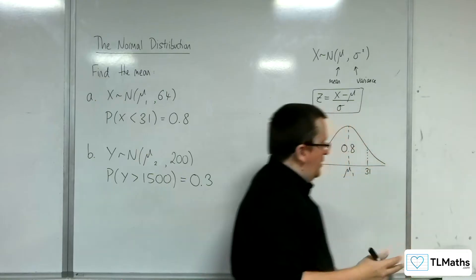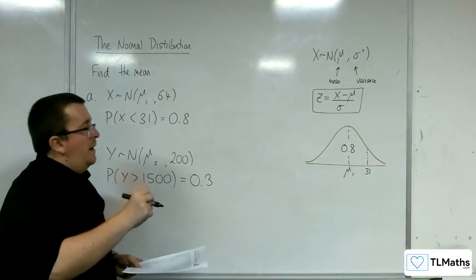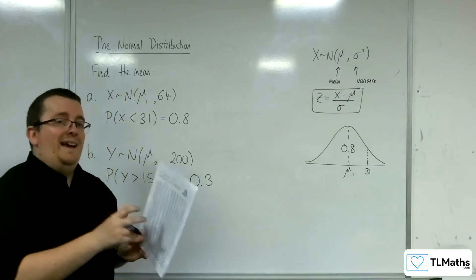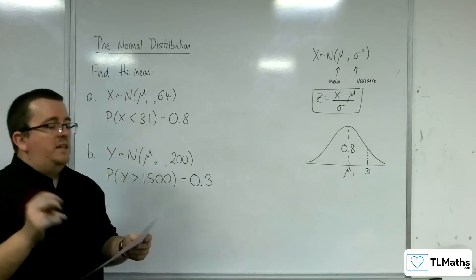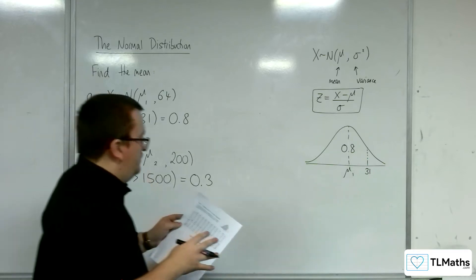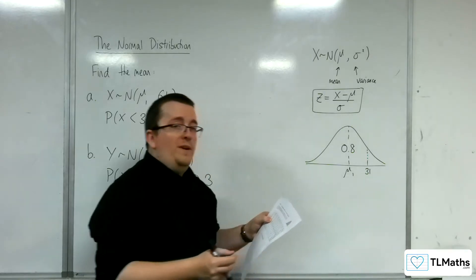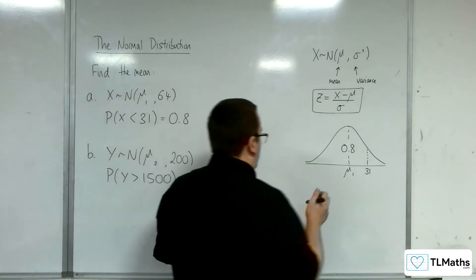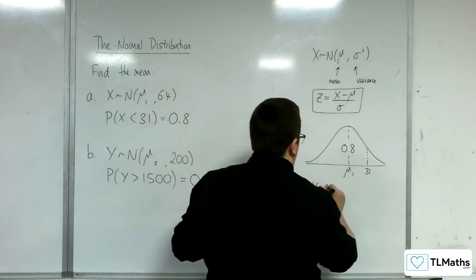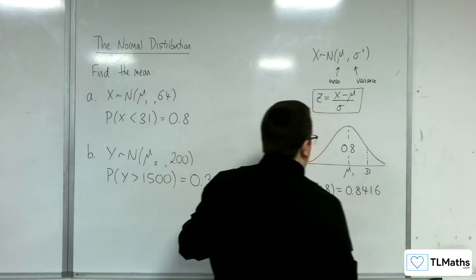So what I'm going to need to do is work out the z value that corresponds with a 0.8 probability. So I need to be in table 2, the one on the back, the smaller table. So I need to look up 0.8, and that's 0.8416. So the inverse norm of 0.8 is 0.8416. That is my z value.